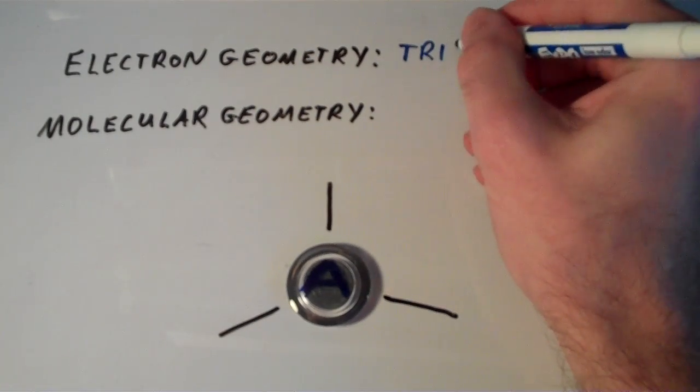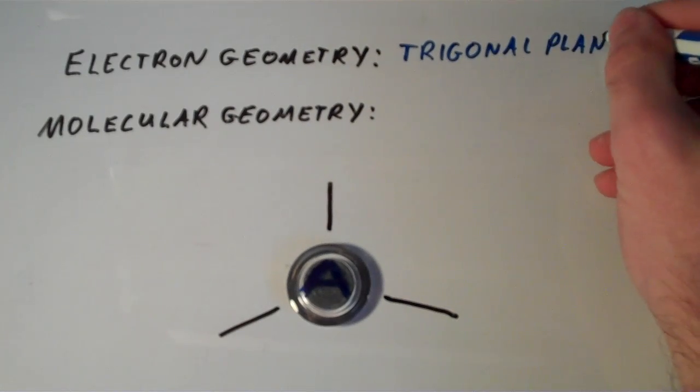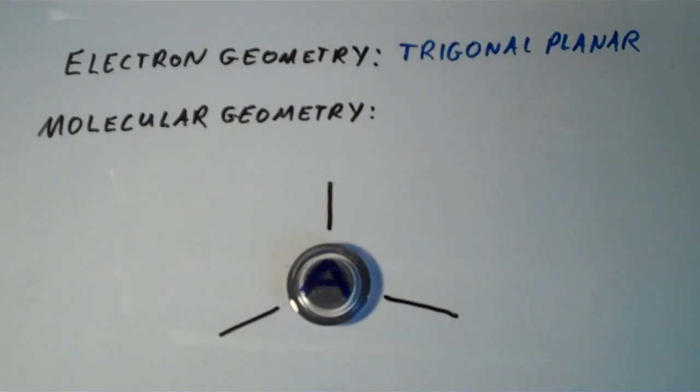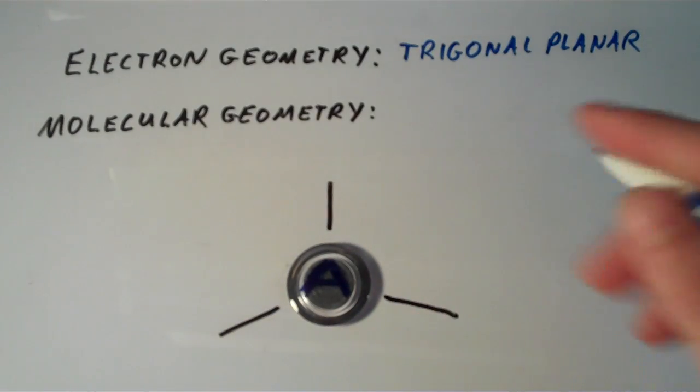And if none of these electron groups are lone pairs, then that means the molecular geometry is going to be the same thing as the electron geometry, which is trigonal planar.